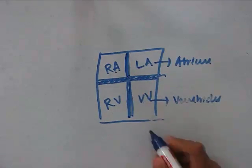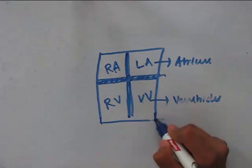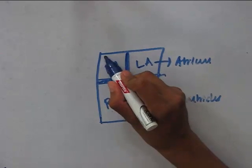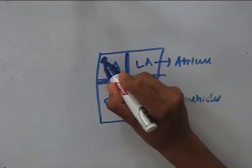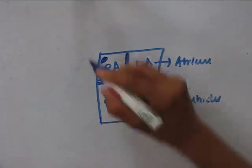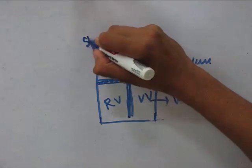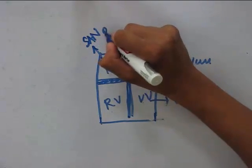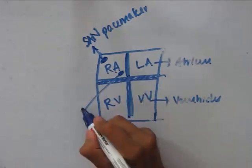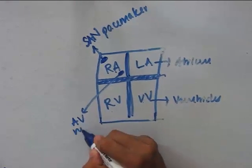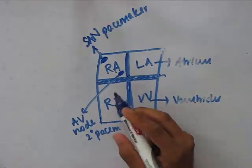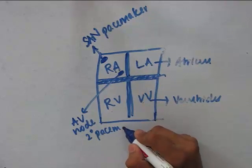Now let's study about the rhythmicity of the heart. We all know that the heart is rhythmic. How does it gain this rhythmicity? There are two bundles of nodal tissue — one situated at the upper right corner and one situated near the atrioventricular septum. The upper one is called the SA node, also called the pacemaker. The lower one is called the AV node, which is also called the secondary pacemaker because it comes to play when the primary pacemaker is disturbed.